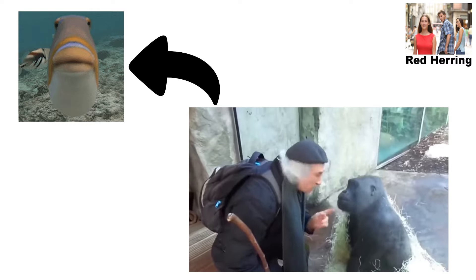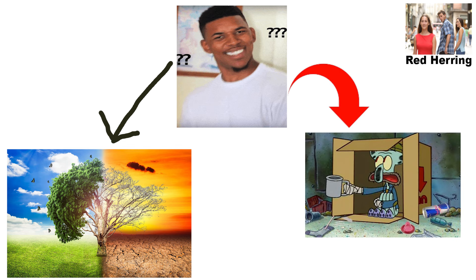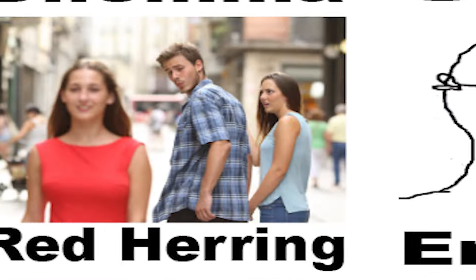Red herring. A red herring introduces an irrelevant topic to divert attention from the original issue. For example, why worry about climate change when we have economic problems to solve — shifts focus away from the actual topic being discussed.